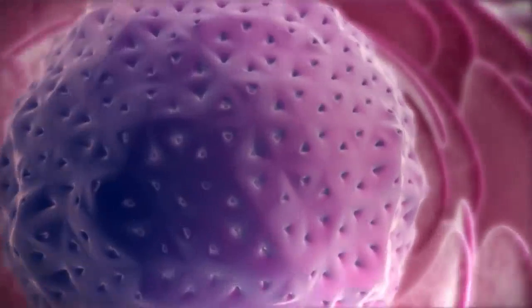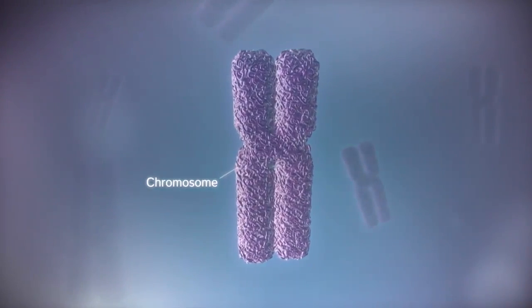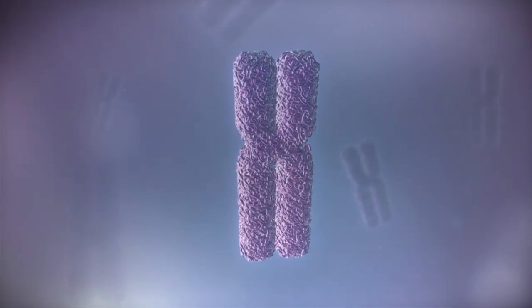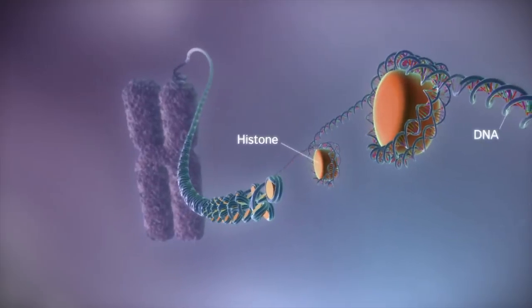In humans, the genome is split between 23 pairs of chromosomes. Each chromosome contains a long strand of DNA, tightly packaged around proteins called histones.